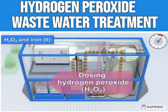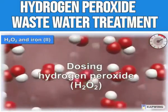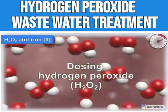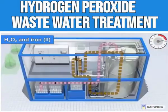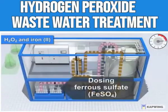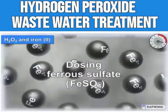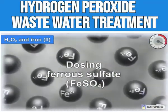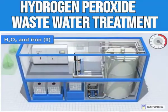Hydrogen peroxide and peracetic acid can be used in many water treatment applications. Thanks to their eco-friendly properties, hydrogen peroxide and peracetic acid are increasingly replacing environmentally harmful chlorine compounds.